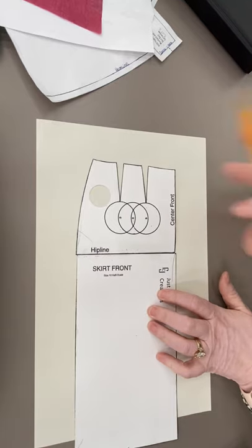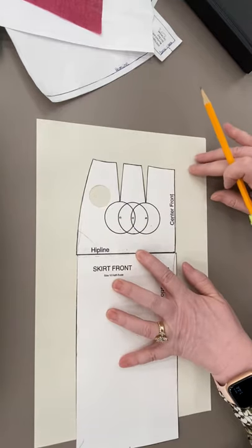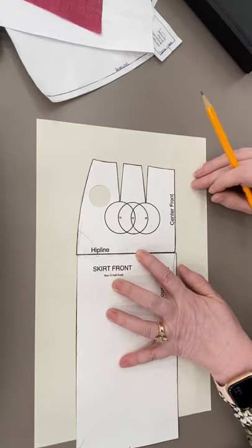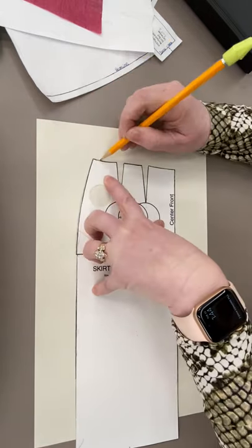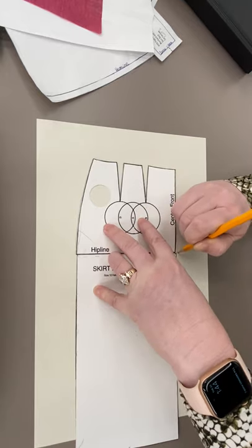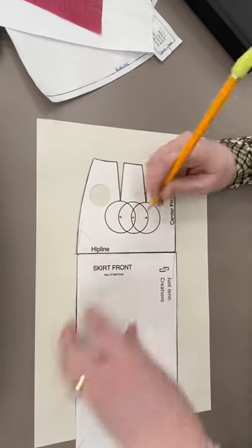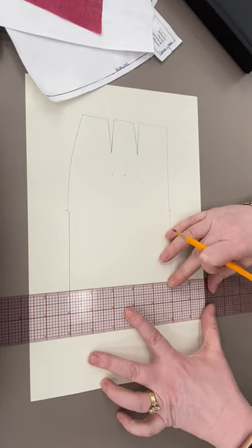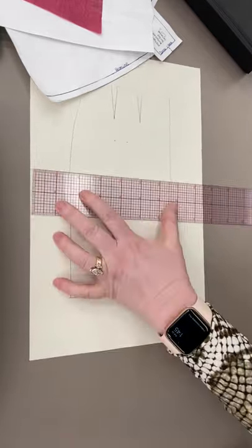Slash method means we trace the skirt first. Go ahead and do that. You're going to want some extra tissue paper. Pivot method, you're going to want extra tissue paper. Slash method, we're filling in with paper anyway. So if we're doing slash method, it doesn't matter where we start, where we stop tracing. What matters is that we get all the lines on there because once we take off the sloper, it's not going back on. So make sure your hip line's on there.